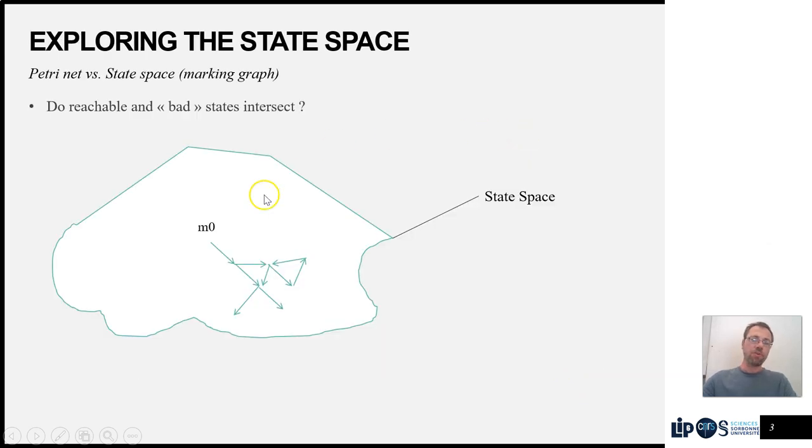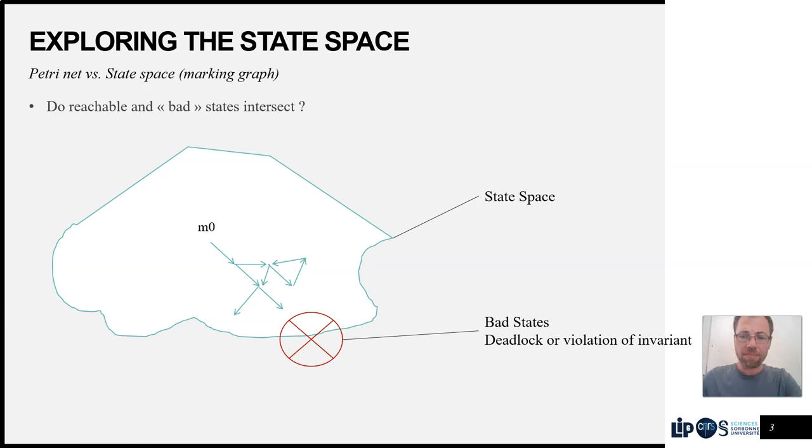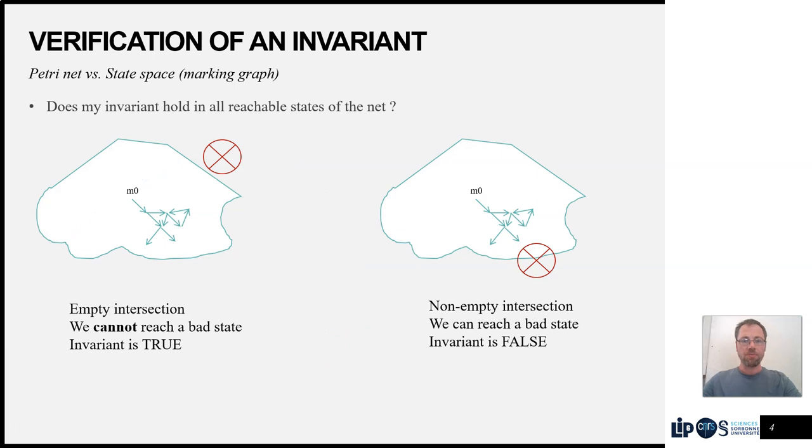So how does this work? Essentially, we start from the initial state of the net and explore this very vast and complex object called the state space or reachable markings. If we can find a bad state, a deadlock state or a violation of the invariant, then we have a verdict. If the state space does not intersect the bad states, then the invariant is true. Otherwise, we say the invariant is false.